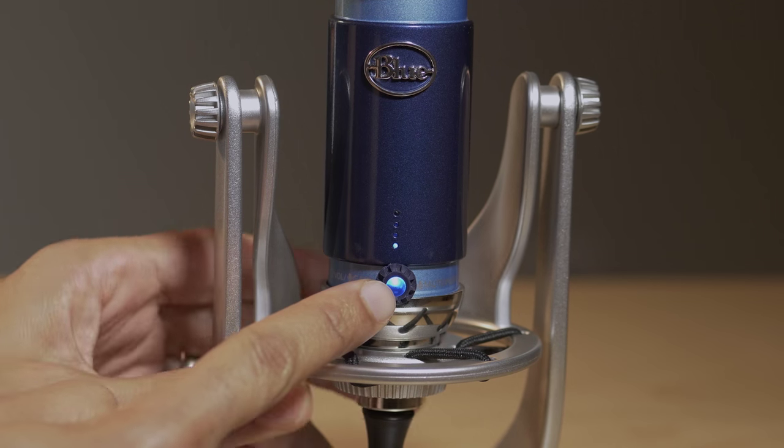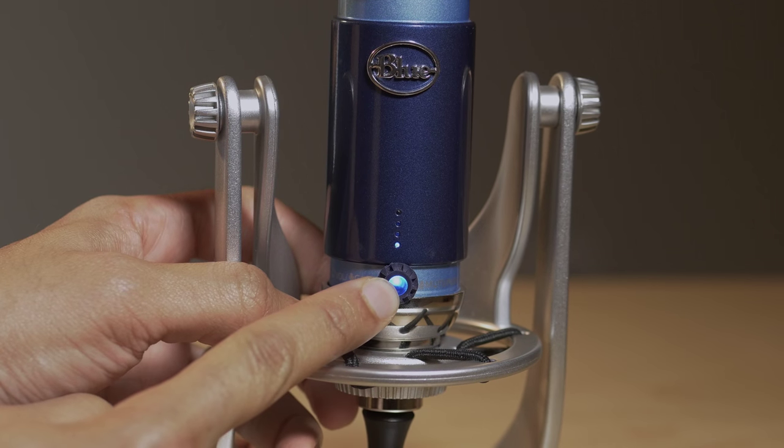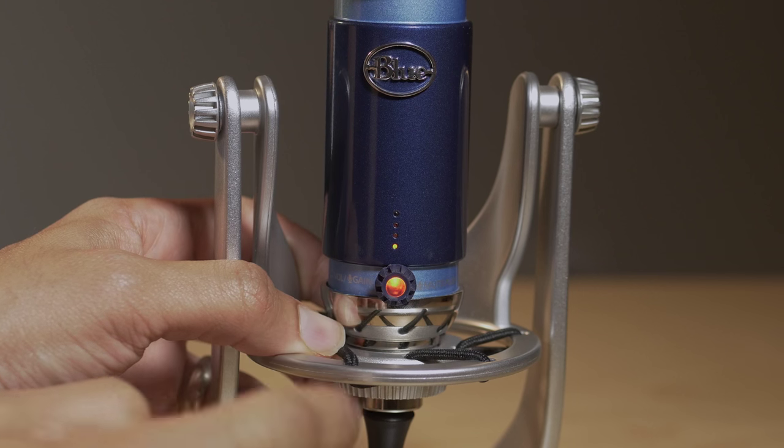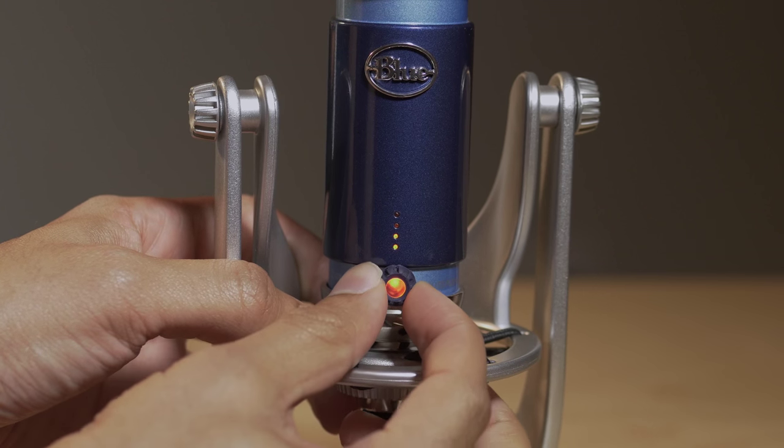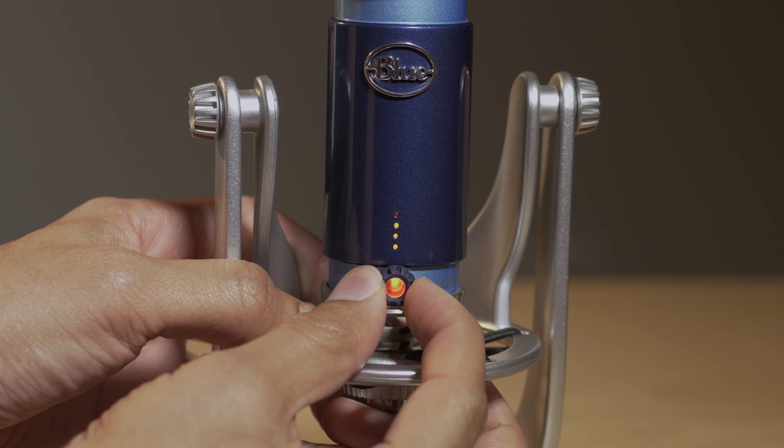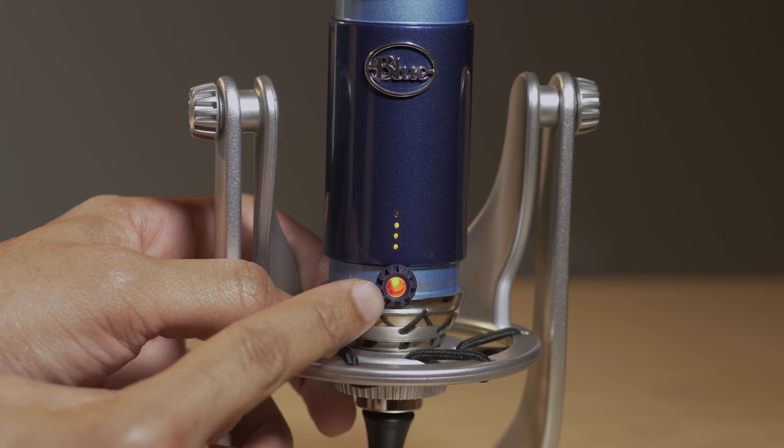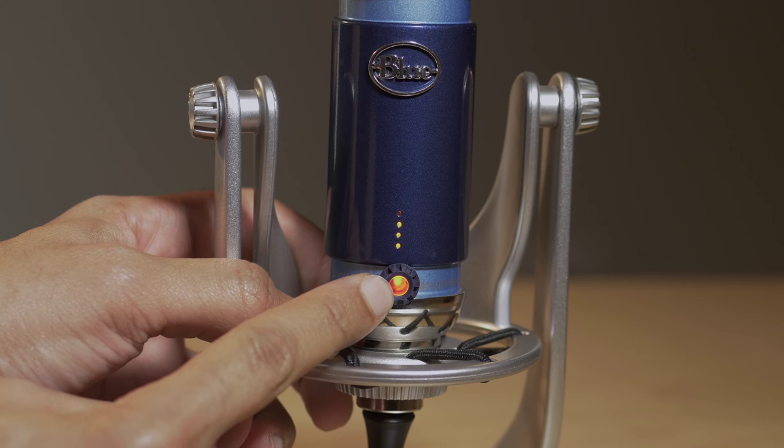This little button is actually a multi-function button. If you press and hold it, you can switch between volume and gain. You can adjust the gain by turning it up, and you can do the same for volume when you switch back to volume mode. You can press it once to quickly mute.